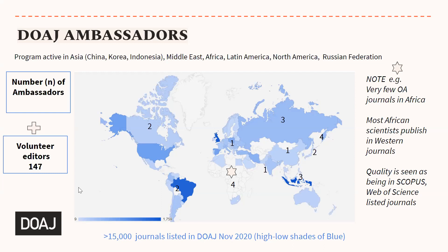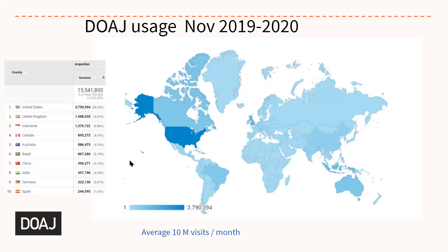We have about 147 volunteer editorial team editors and associate editors in DOAJ. The number of journals we list is over 15,000 at the moment. If you look at the usage — how many people are looking at DOAJ as a source of information — it's fairly global. There is not a spot in the world where people don't look, but mostly they are looking at DOAJ in the United States, United Kingdom, Indonesia, Canada, and Australia.